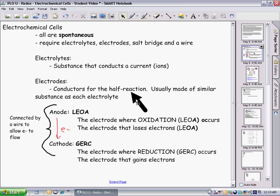Electrodes themselves, there will be two: the anode and the cathode. Using our Leo the Lion goes GERD mnemonic from before, we've changed it to LEOA and GERC. LEOA - loss of electrons is oxidation, and oxidation always occurs at the anode. So the anode is where oxidation occurs and the electrode that loses electrons. The cathode is the electrode where reduction occurs - gain of electrons is reduction at the cathode, and it is the electrode that gains electrons.